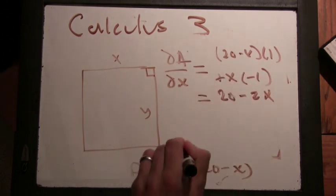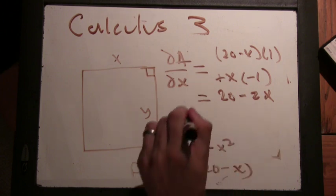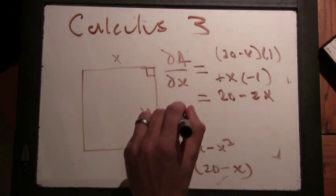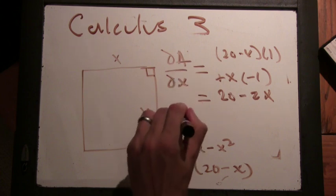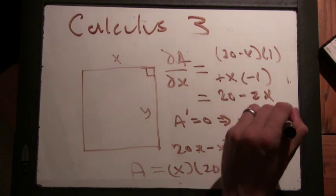You could have also multiplied out and you would have had 20x minus x squared, and you can see that 20 minus 2x. So the derivative is 0. A prime equals 0 implies x equals? 10.